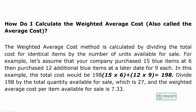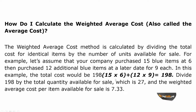Similarly, when we purchased the same item again after a few days, we bought 12 items, but the rate had risen to 9 rupees. When we add 15 multiplied by 6 plus 12 multiplied by 9, our answer comes to 198. Let us pause for a moment and consider: if someone asked us what the average price of those 15 items we purchased was, the straightforward answer would be 6.